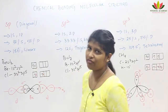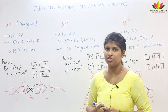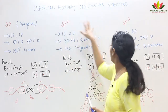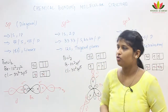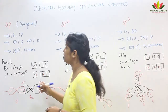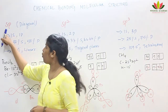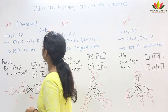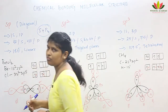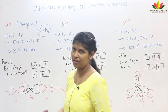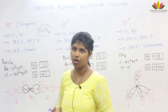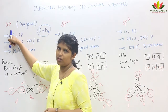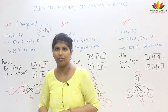Now we will see the types of hybridization. The three basic types are SP, SP2, and SP3 hybridization. Starting with SP hybridization: 1S overlaps with 1P — for example, S overlaps with Pz. When S overlaps with 1P, the hybrid orbitals formed are called SP hybrid orbitals. This is also called diagonal hybridization.